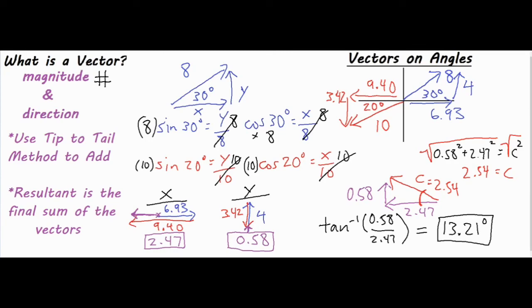Our final answer for this complex problem is a resultant vector of 2.54 at 13.21 degrees. You can describe the direction as 13.21 degrees north of west, because west is to the left and the vector tilts upward from there. Adding this directional detail is important — otherwise it's unclear which angle you're referring to. I hope this was helpful in understanding what a vector is and how to solve all types of vector problems.